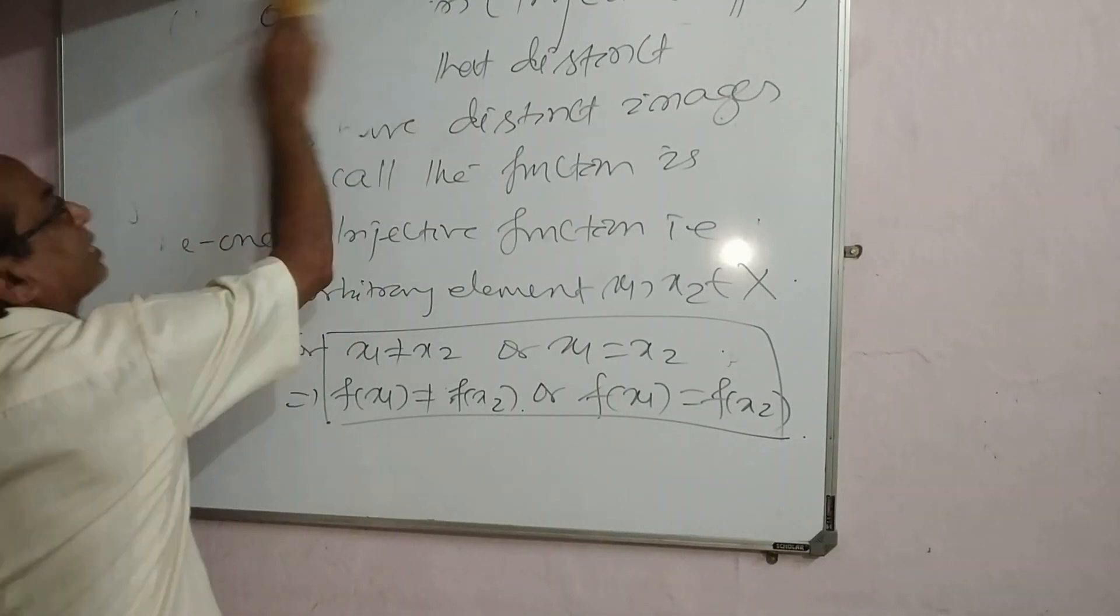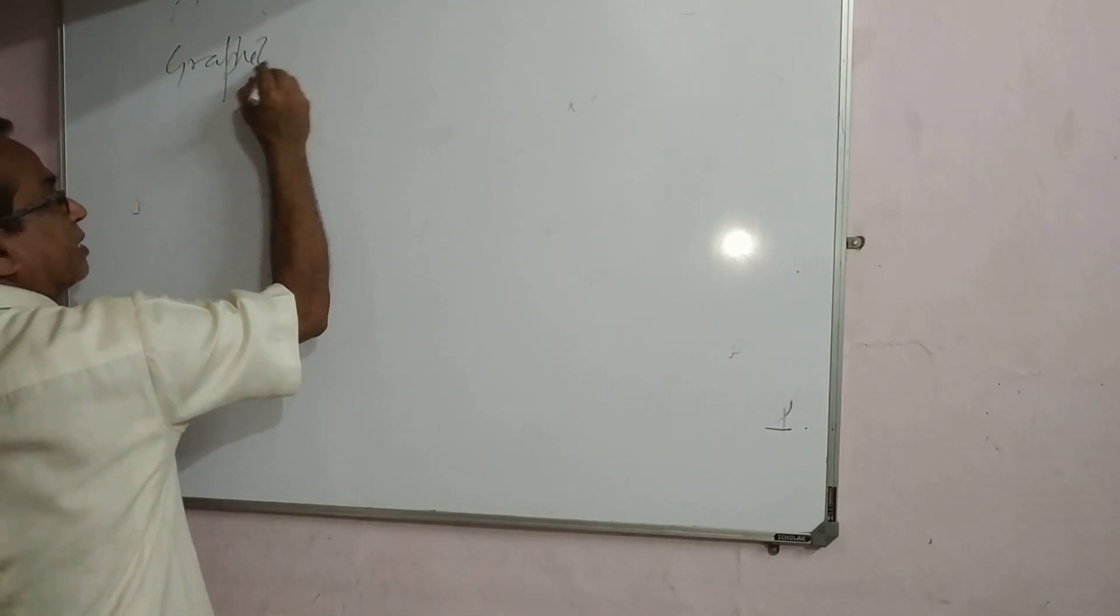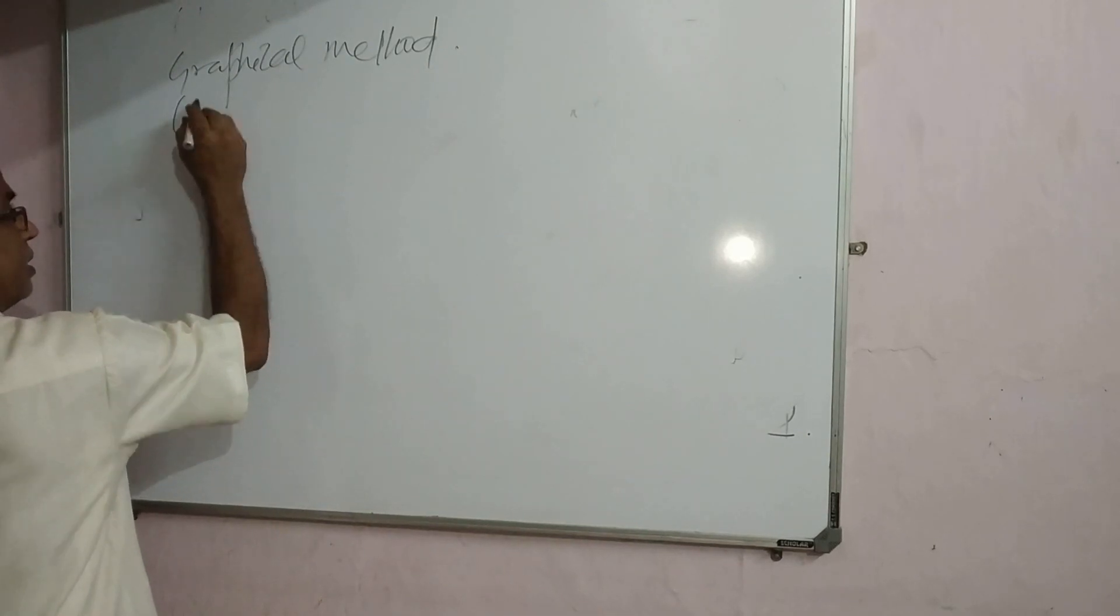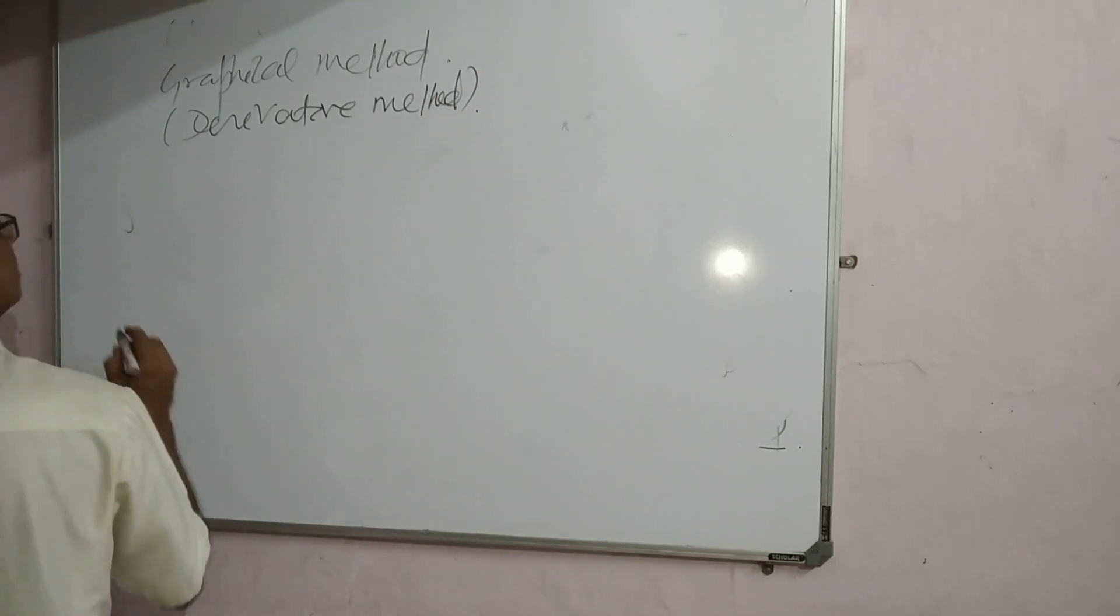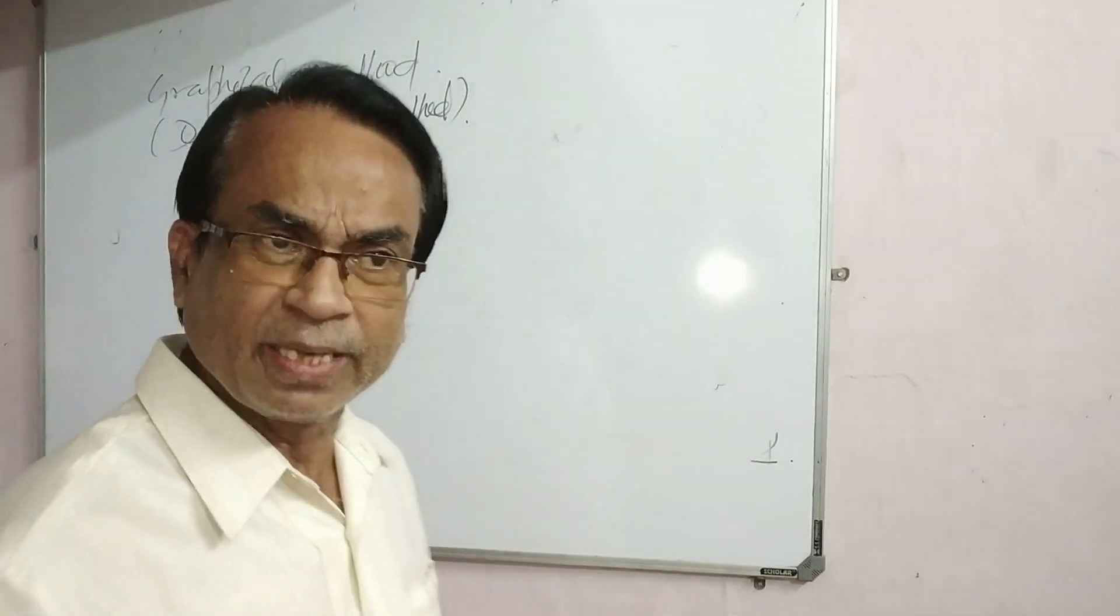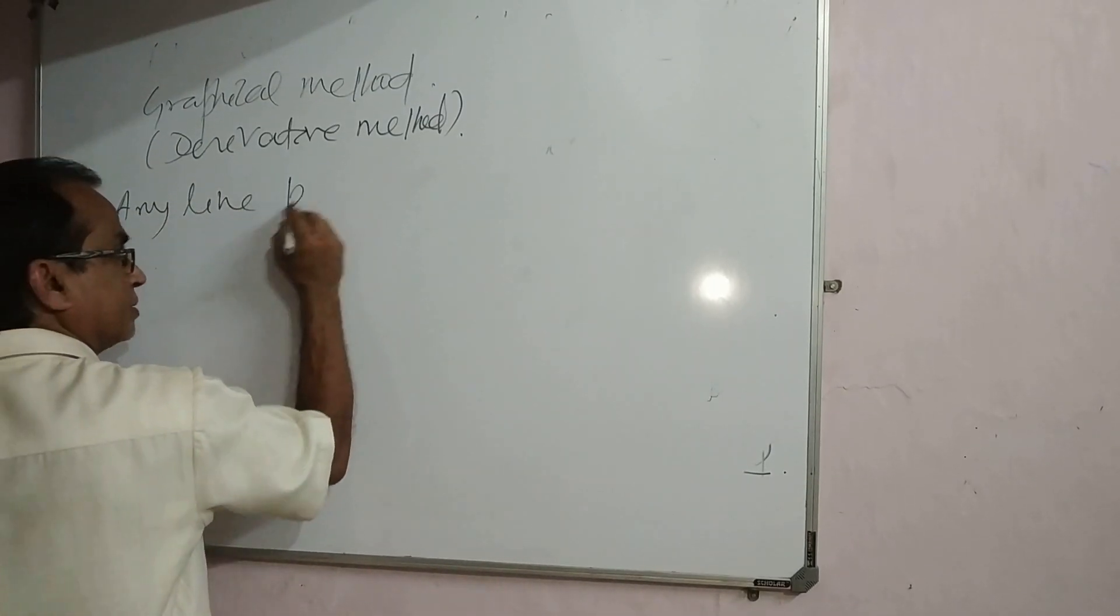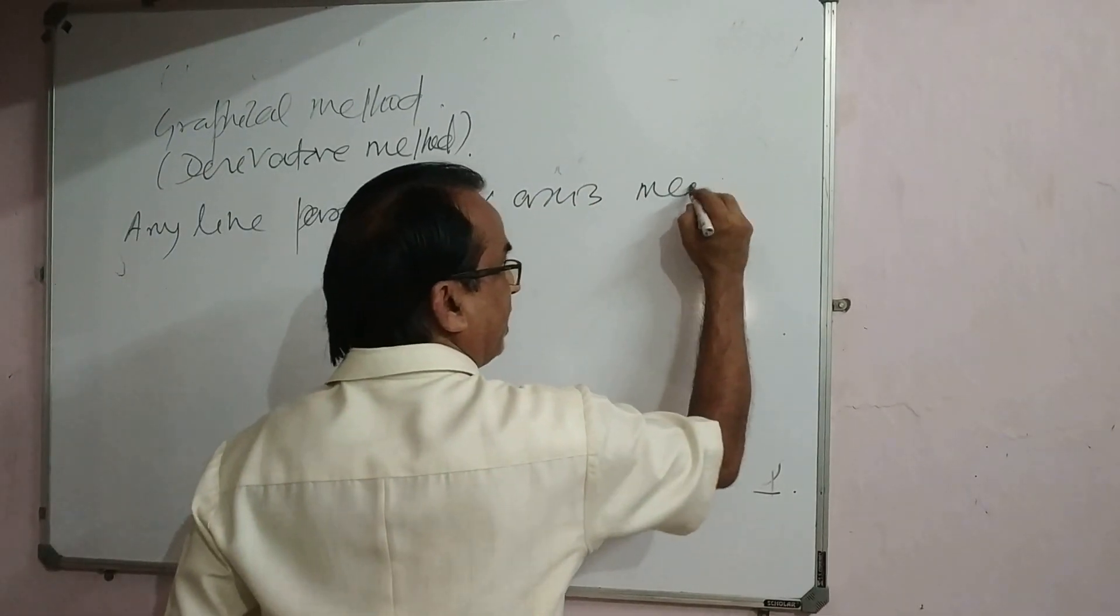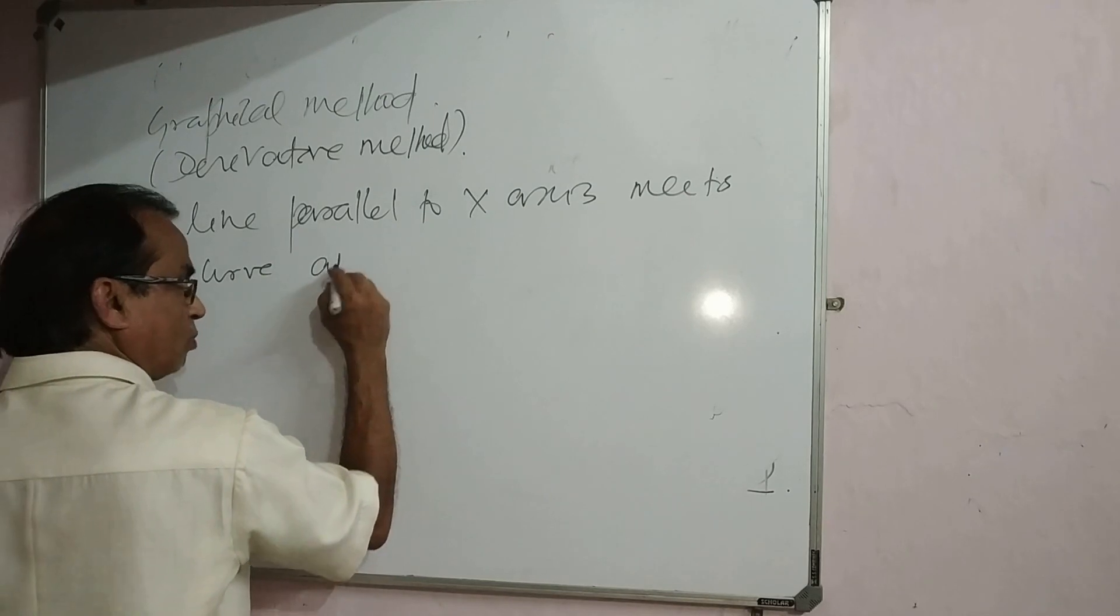Coming to the graphical method or derivative method, we say that distinct elements have distinct images. That means any line parallel to x-axis meets the curve at most one point.